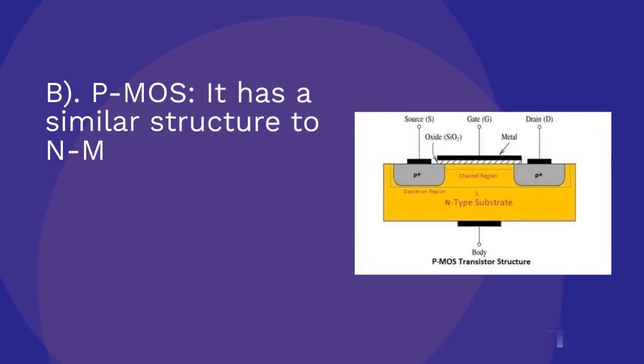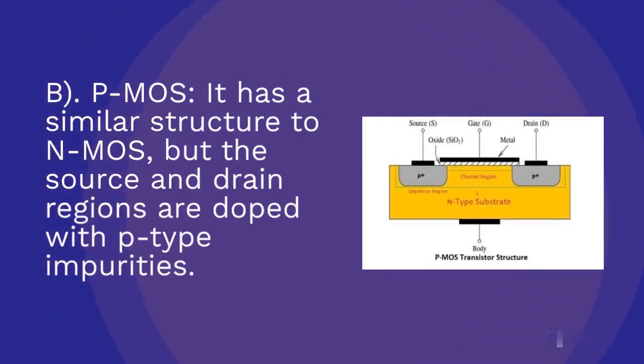P-MOS has a similar structure to N-MOS, but the source and drain regions are doped with P-type impurities.